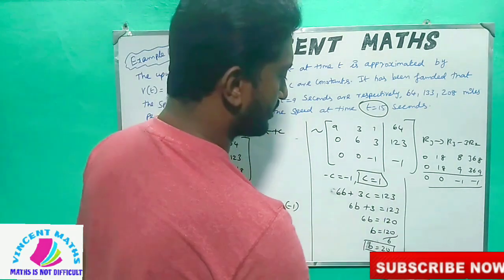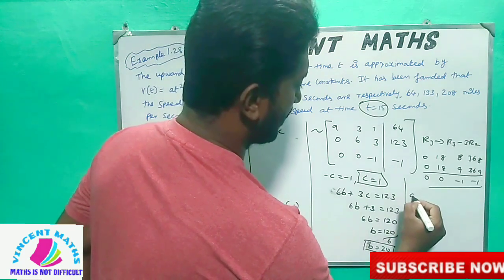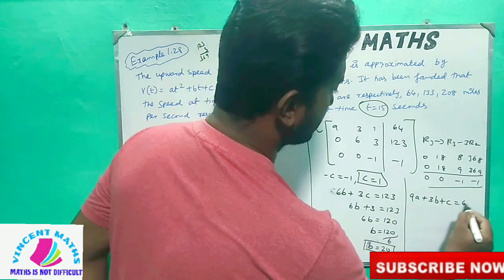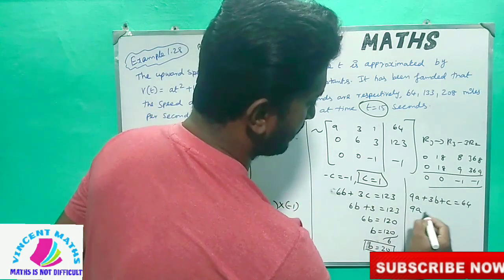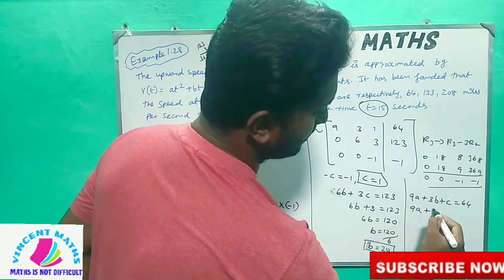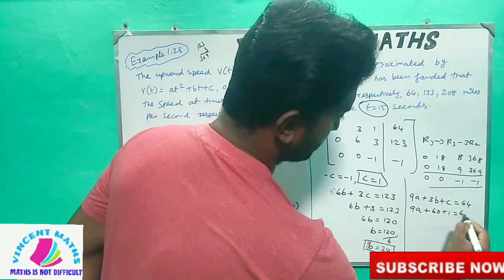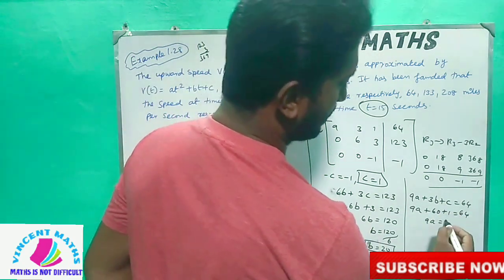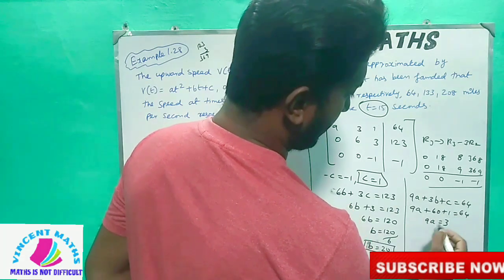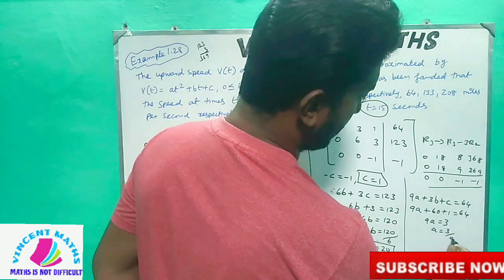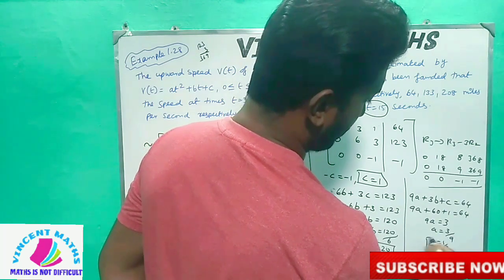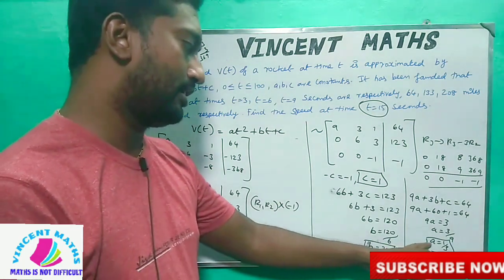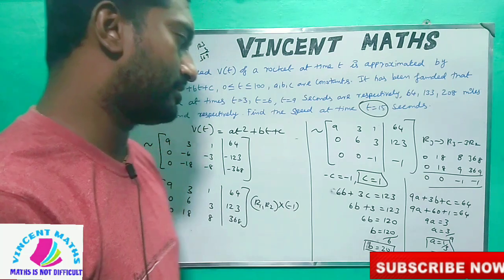Now using the first equation, 9A plus 3B plus C equals 64. Substituting C equals 1 and B equals 20: 9A plus 60 plus 1 equals 64, so 9A equals 3, therefore A equals 3 divided by 9, which gives A equals 1/3.